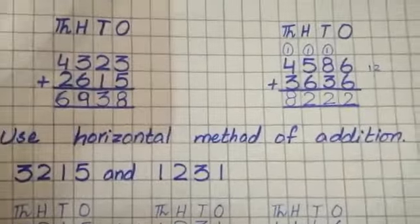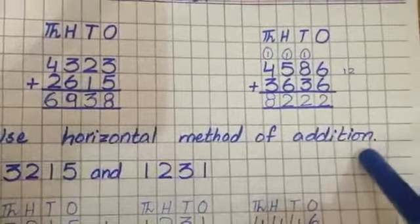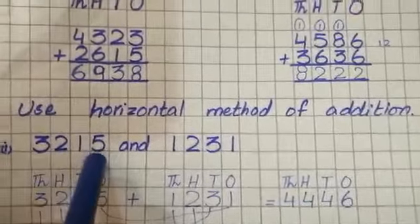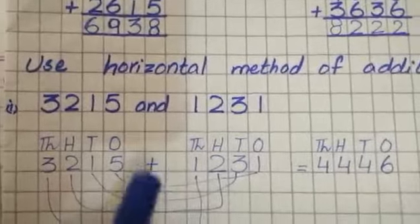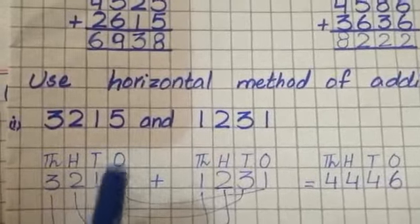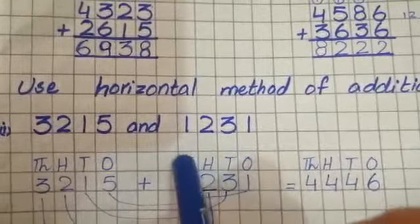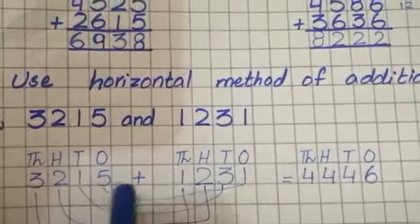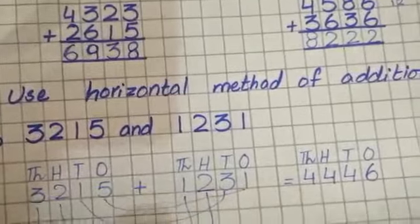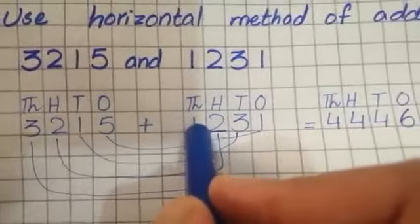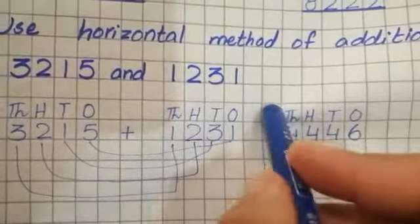Now we solve questions in horizontal method. We use horizontal method of addition. Question number 1: 3215 and 1231. Again write the question and put the place value over each digit. 1's, 10's, 100's, 1000's with sign of plus. Put sign of equal and write again place value for answer.